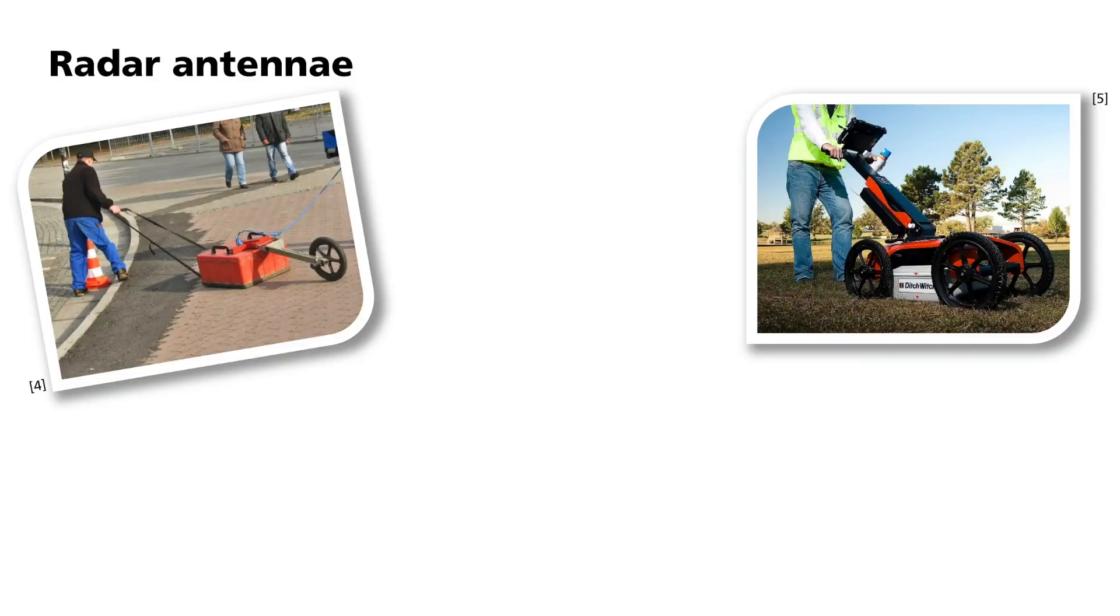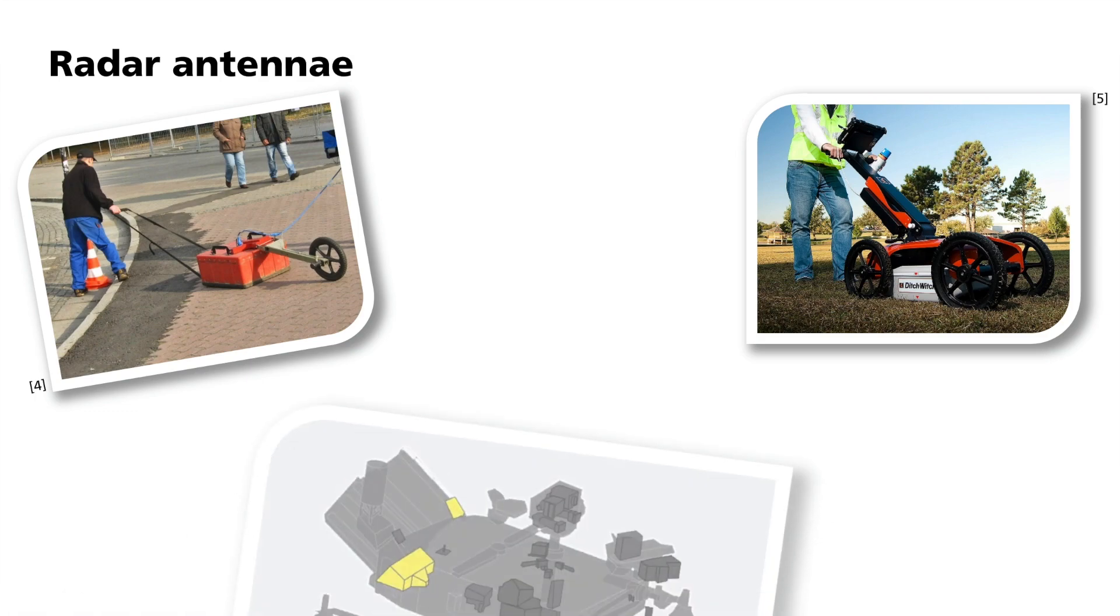The active excitation of the waves is of course also a completely different scenario to that encountered in seismics. For this purpose, GPR uses an antenna. The antenna continuously emits electromagnetic pulses while at the same time being moved across the Earth's surface. For this purpose, there are different types of construction where the antenna is either more or less close to the ground.